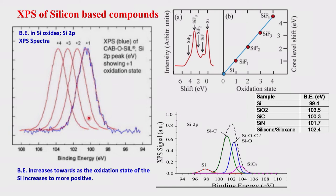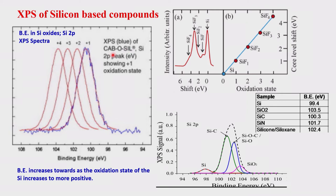Looking at this slide, silicon 2P is shown. Silicon can be in 0, +1, +2, +3, or +4 oxidation states in different compounds. Approximately: +1 is around 100 eV, +2 around 102 eV, +3 around 103 eV, and +4 around 104 eV. Binding energies increase considerably as you go from lower to higher oxidation state — that is the key take-home message.